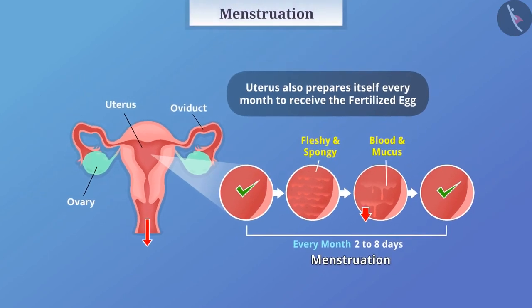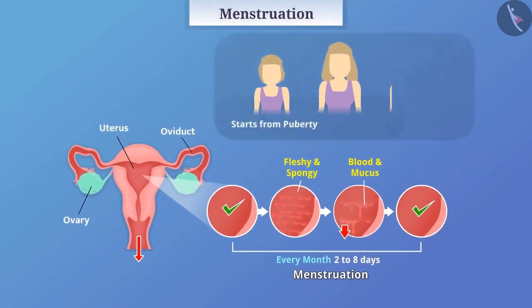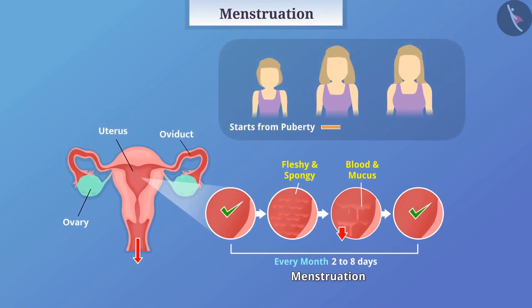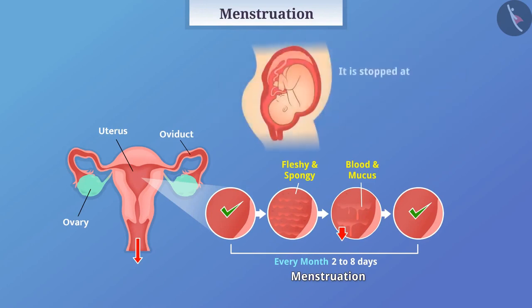The cycle of menstruation starts from puberty and continues till the age of 45 to 55. It is stopped during pregnancy. This process is controlled by hormones.